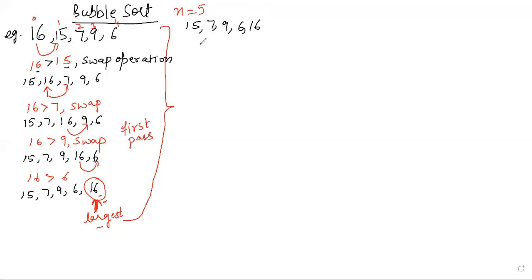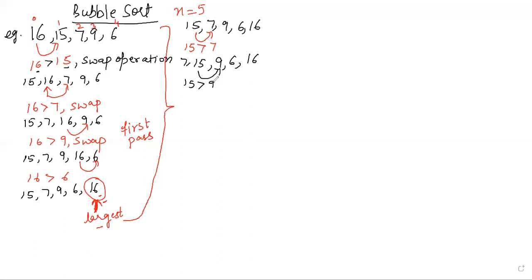So now I will start comparing adjacent elements again. I compare 15 with 7 — 15 is greater, so they swap. The array becomes 7, 15, 9, 6, and 16. Then comparison happens between 15 and 9. 15 is greater than 9, so a swap occurs. After the swap, the new dataset becomes 7, 9, 15, 6, and 16.